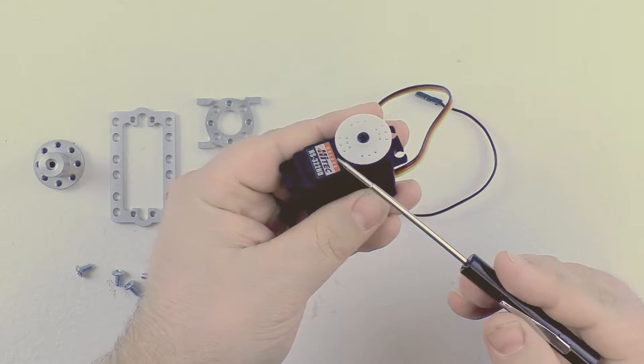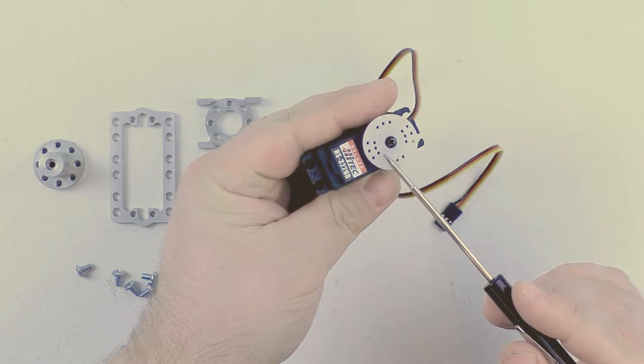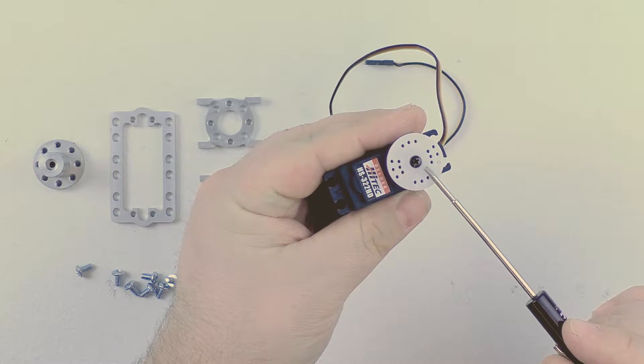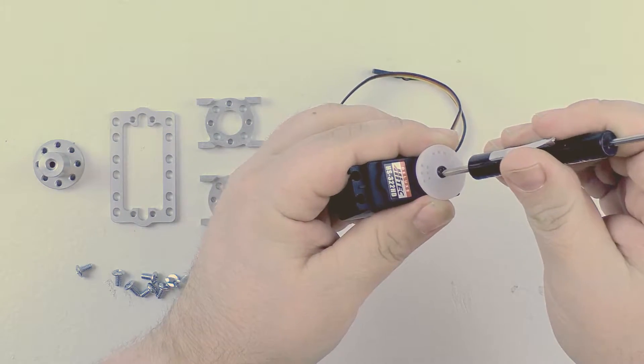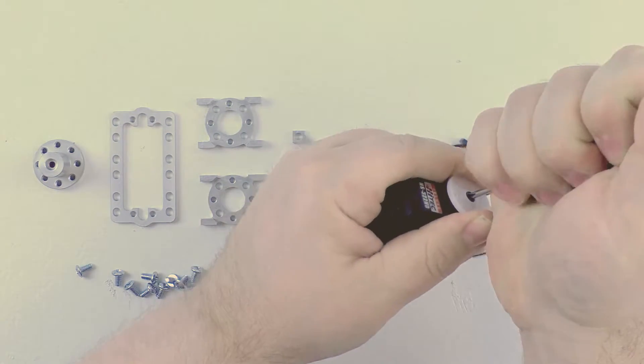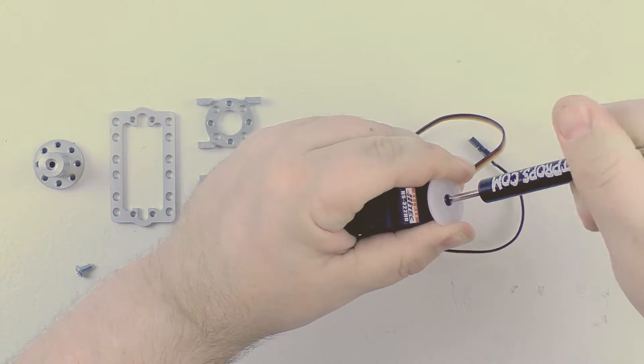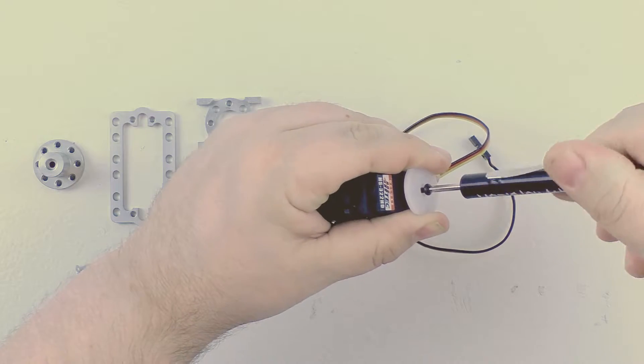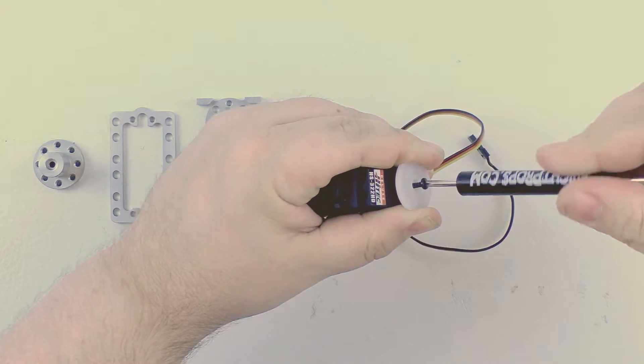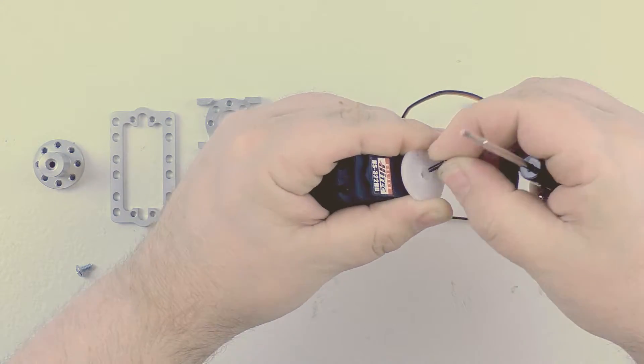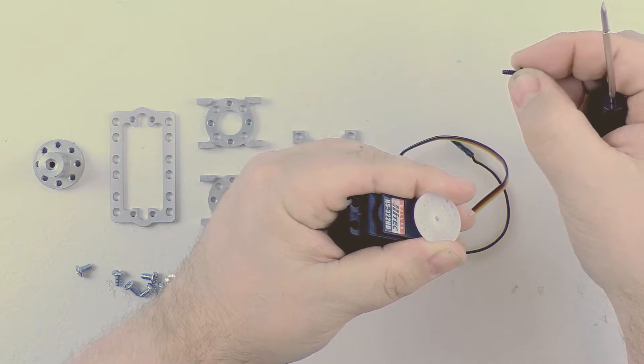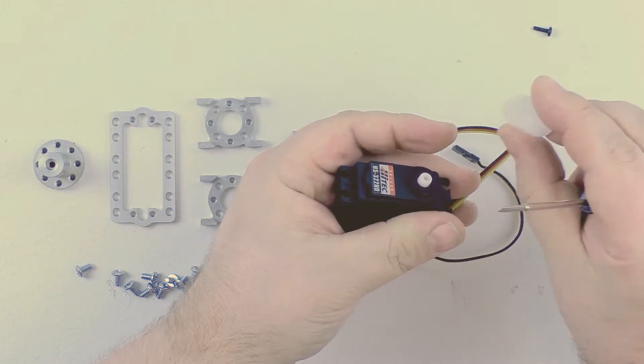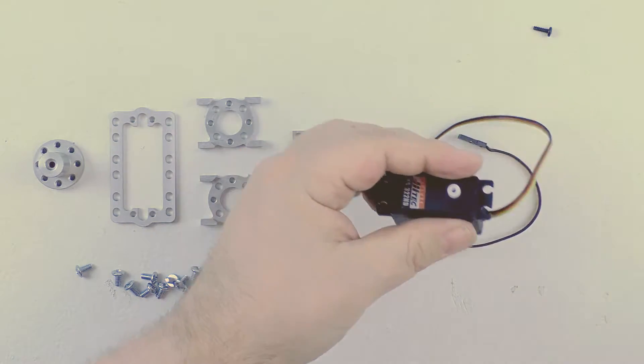The first thing we are going to want to do is take the gear wheel off of the top of the servo. You can see there is a Phillips head screw here. We are just going to go ahead and unscrew that. We want to make sure that we keep this screw because we are going to need it to install a piece later. We are just going to set that there. We can then remove the plastic gear wheel here and set it aside.